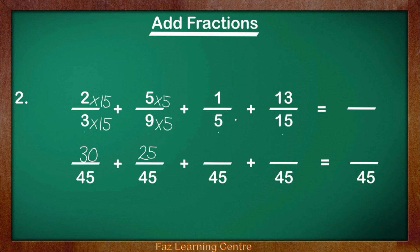Let's look at the next fraction, 1 fifth. 5 times what equals 45? 5 times 9 equals 45. We've timed the denominator by 9, therefore we're going to times the numerator by 9. So 1 times 9 equals 9. So we've got 9 over 45.